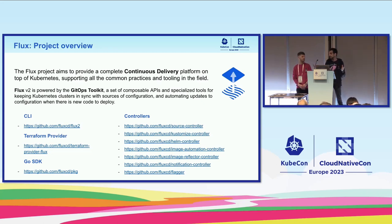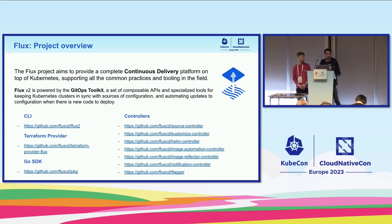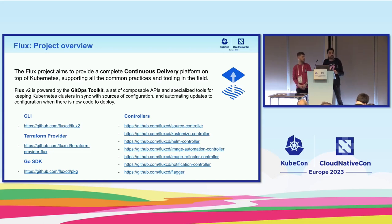If you want to do image automation, you need to deploy the image automation controller. If you want to do progressive delivery and shift traffic from one site to another and have a safer way of deploying user-facing apps, you could use Flagger and so on. Flux is not one thing, it's made out of many controllers, and we have architecture in place where others can extend Flux without modifying its source code.